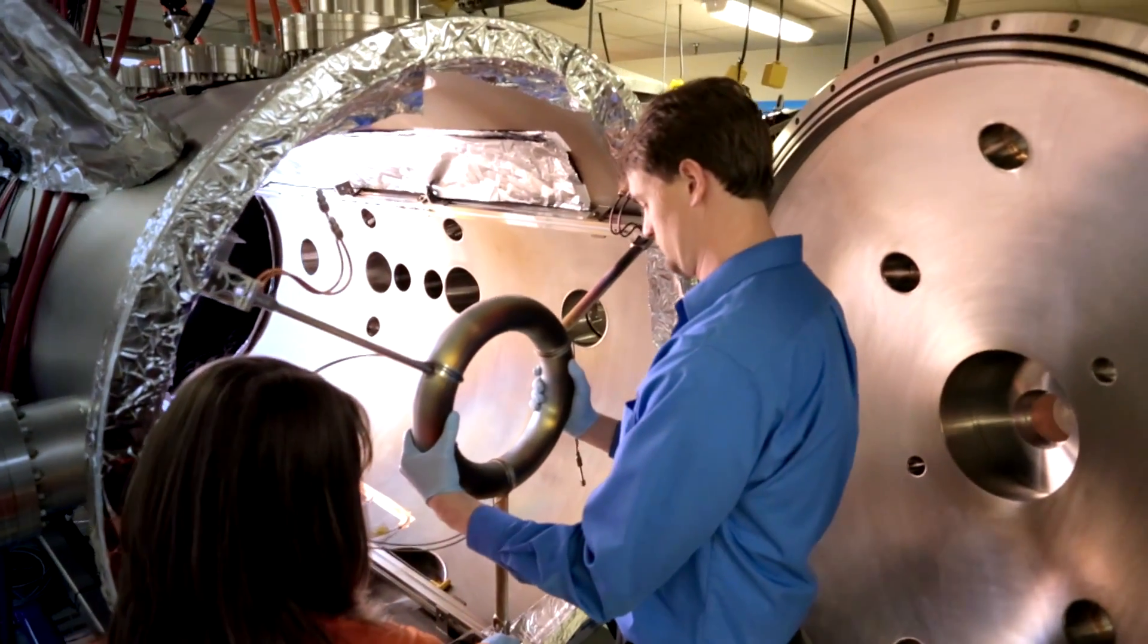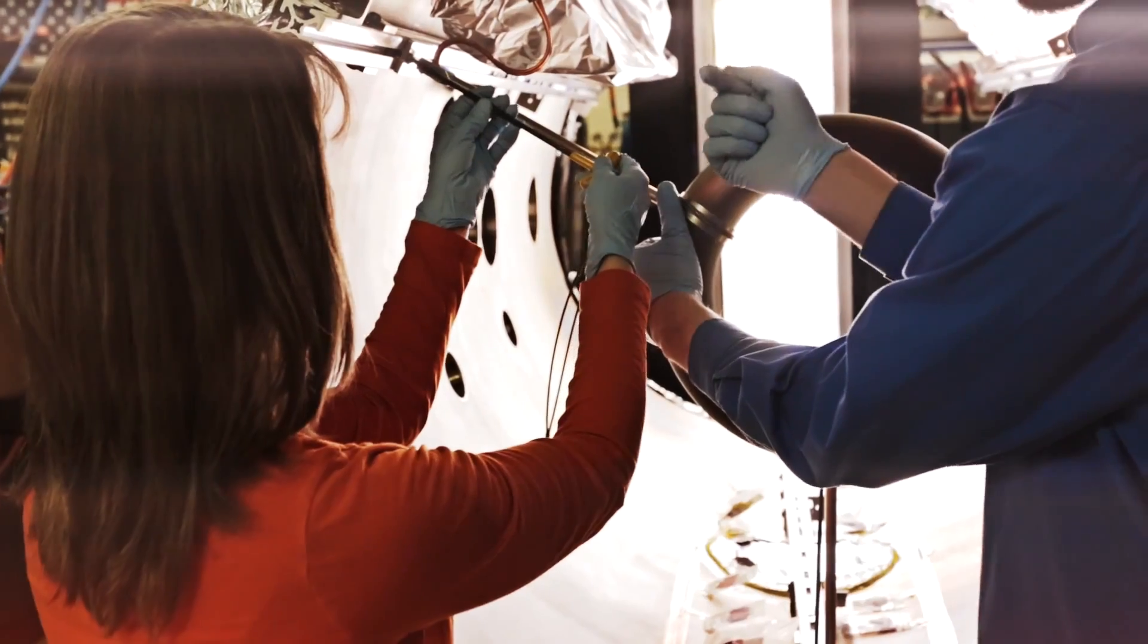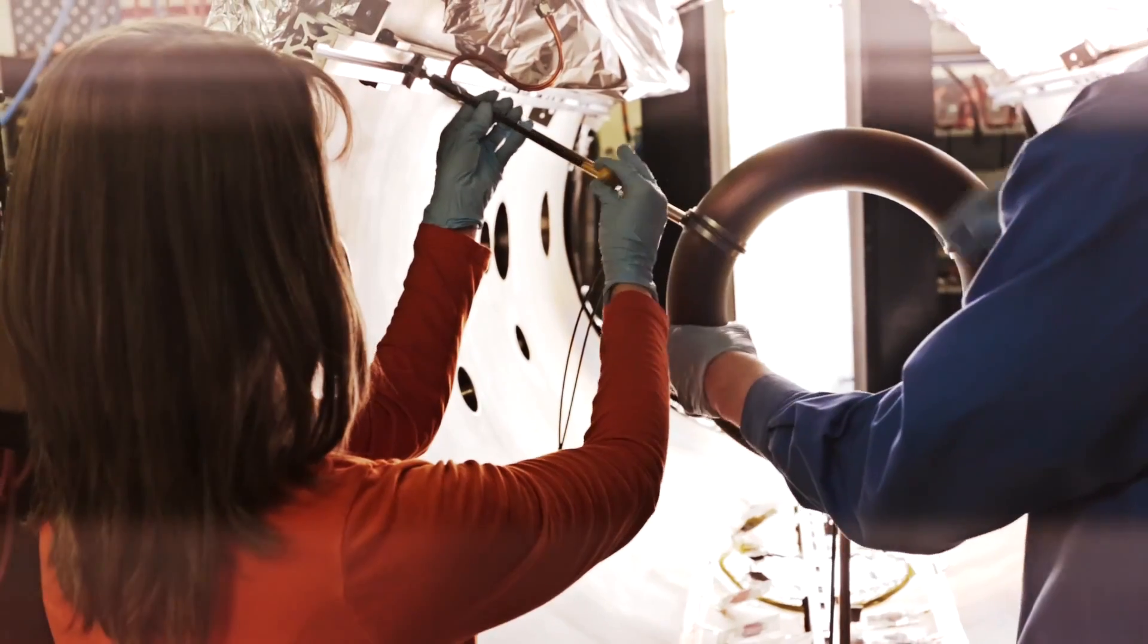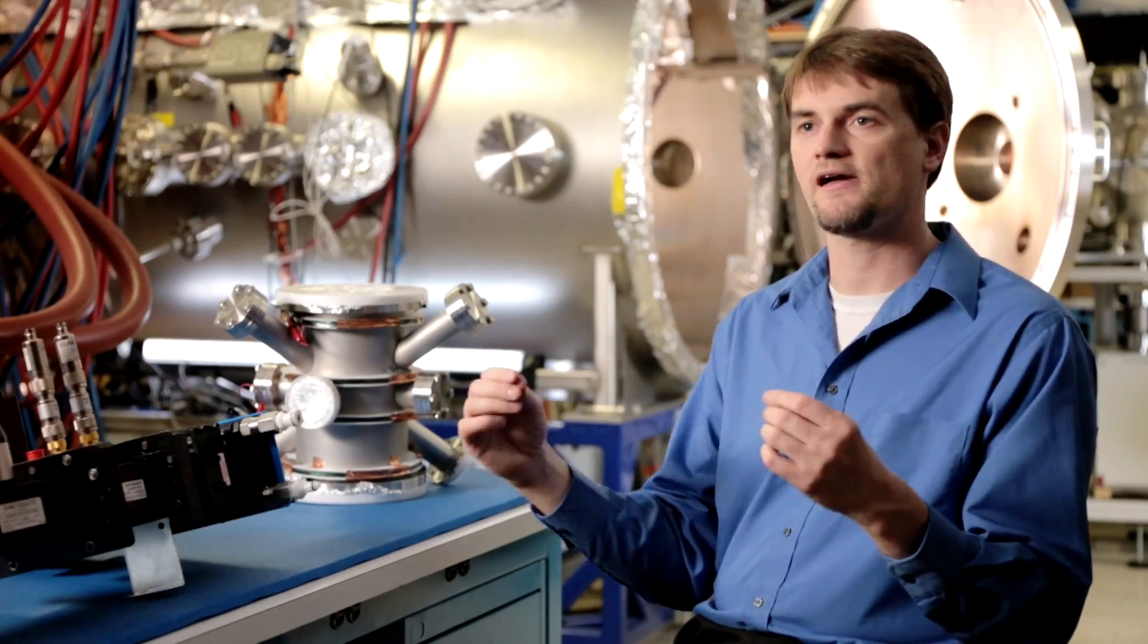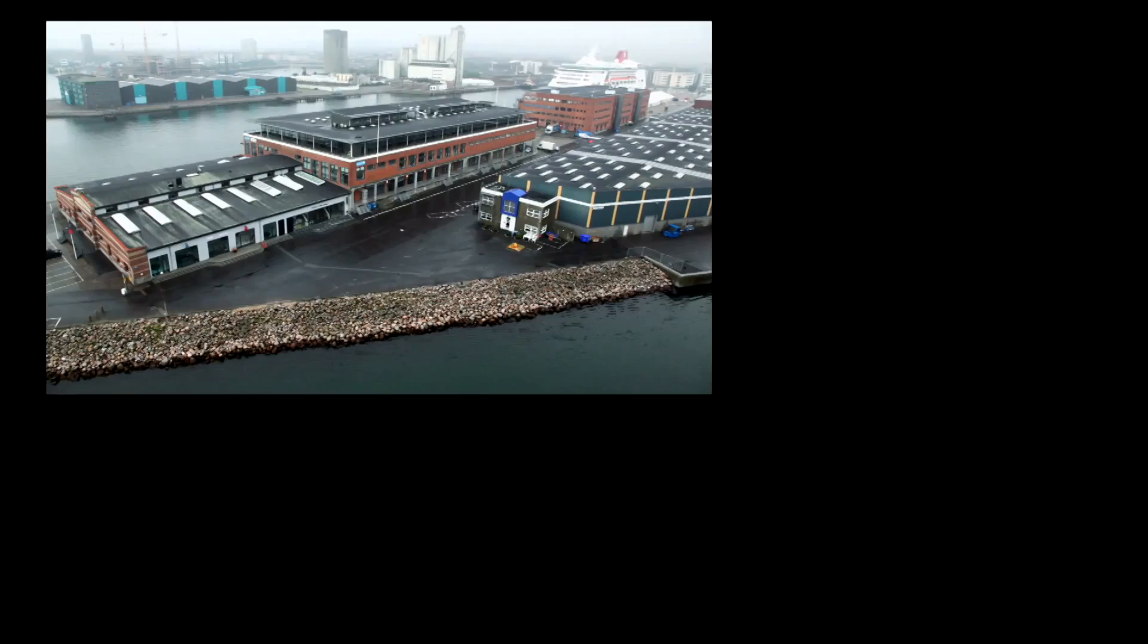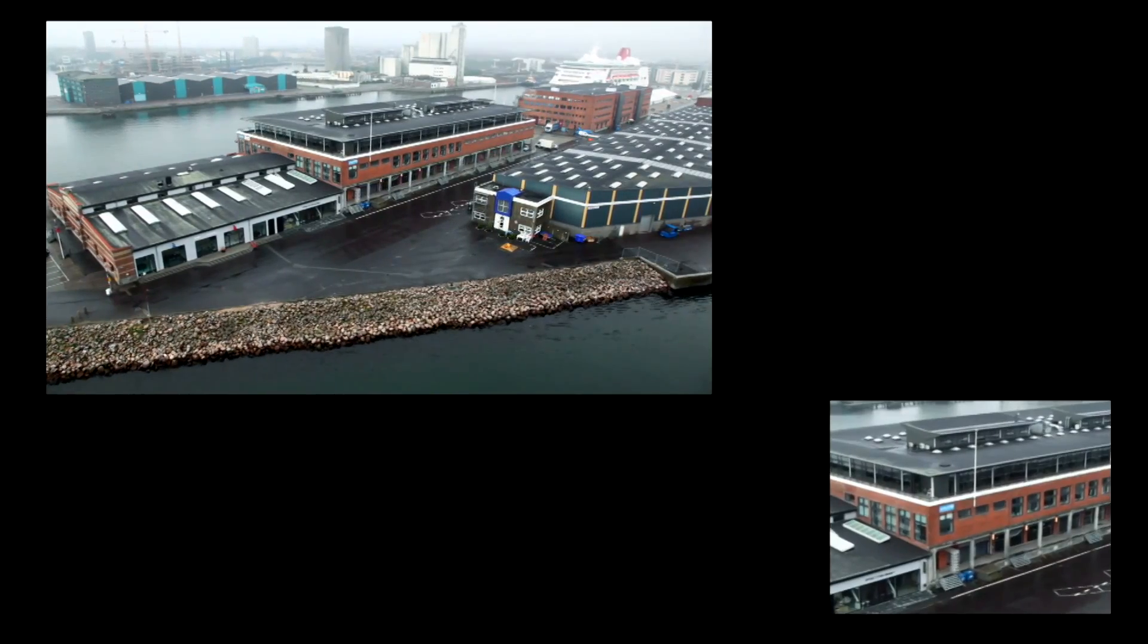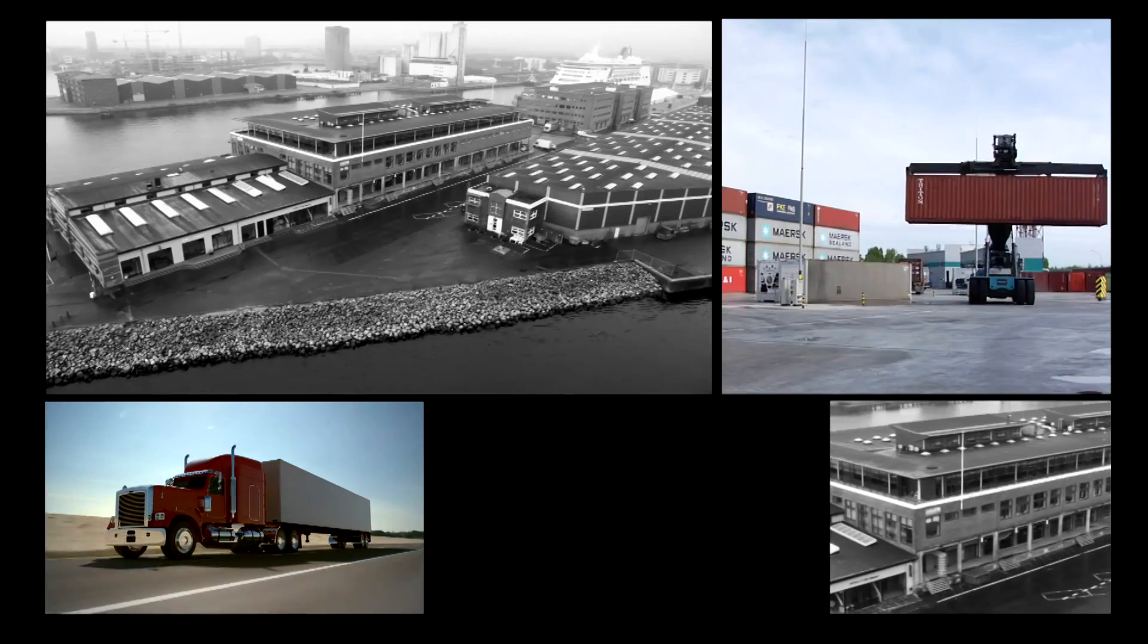We think we have a very robust strategy going forward that has potential for success. What this concept does is it's a high beta concept, which means we use a high fraction of the magnetic field pressure. We use all of its potential and that means we can make our devices ten times smaller. So instead of something the size of a building, we have something the size of a large truck.